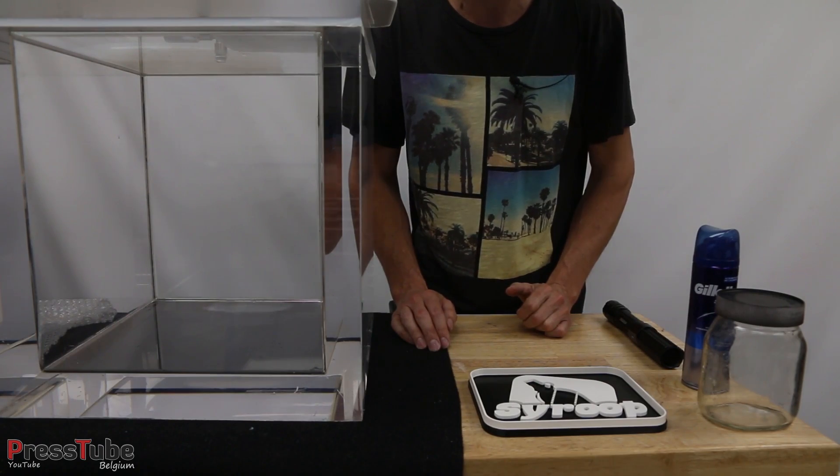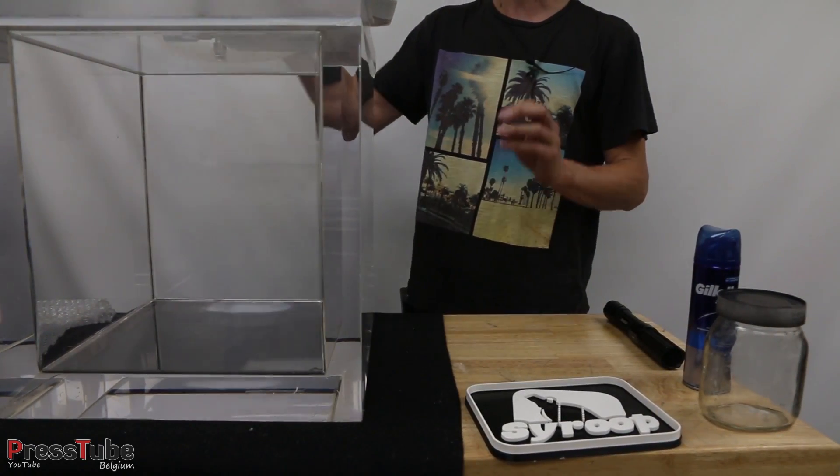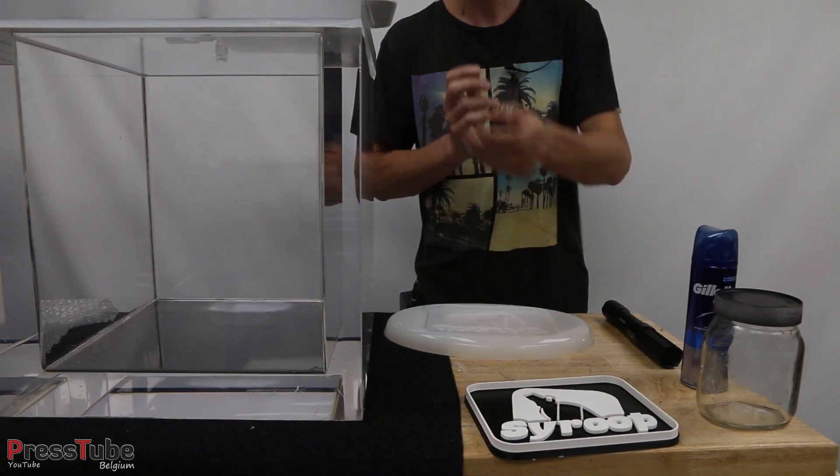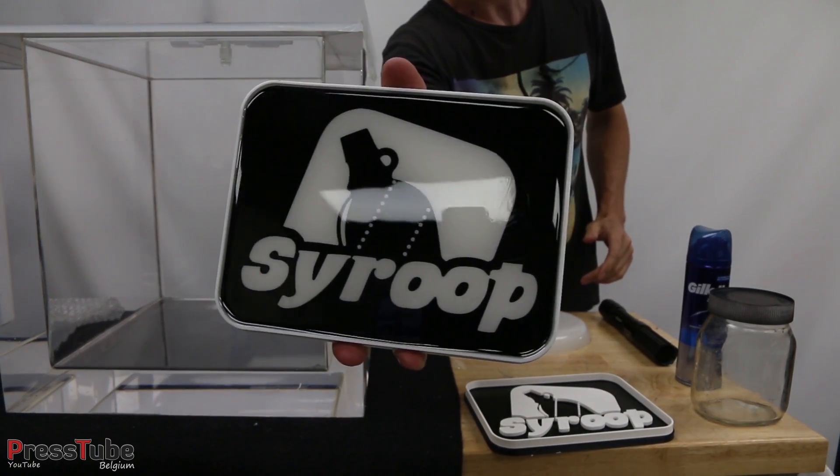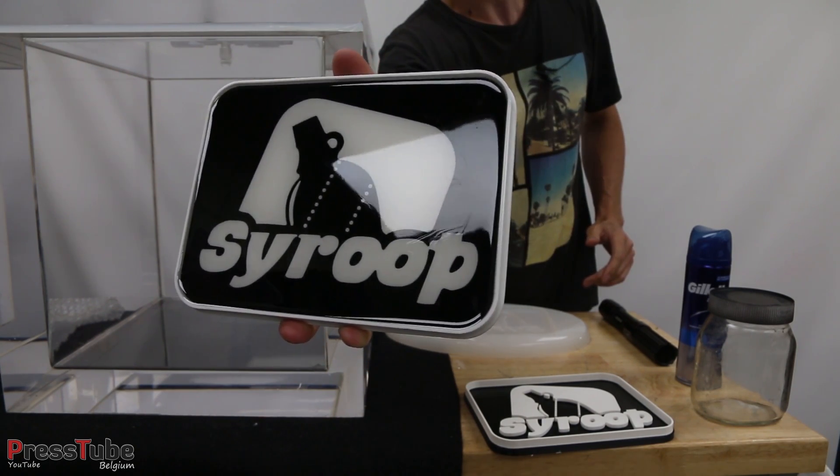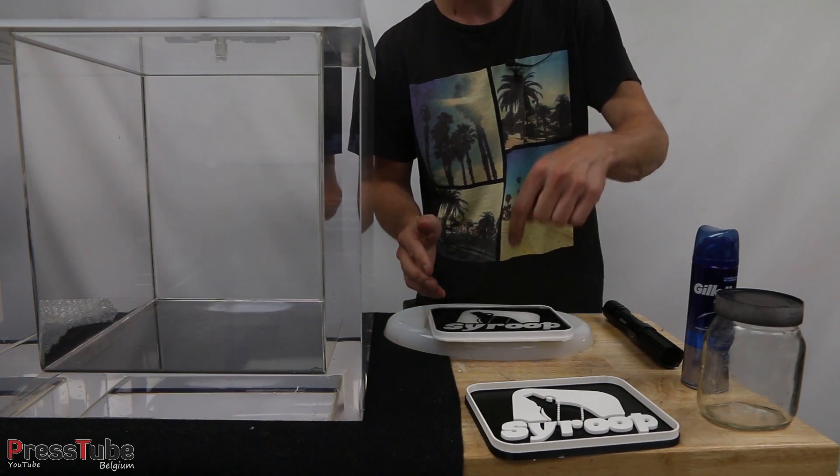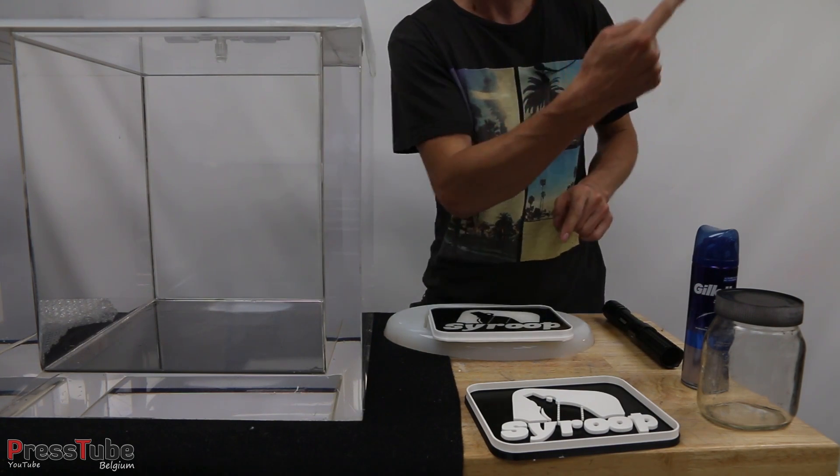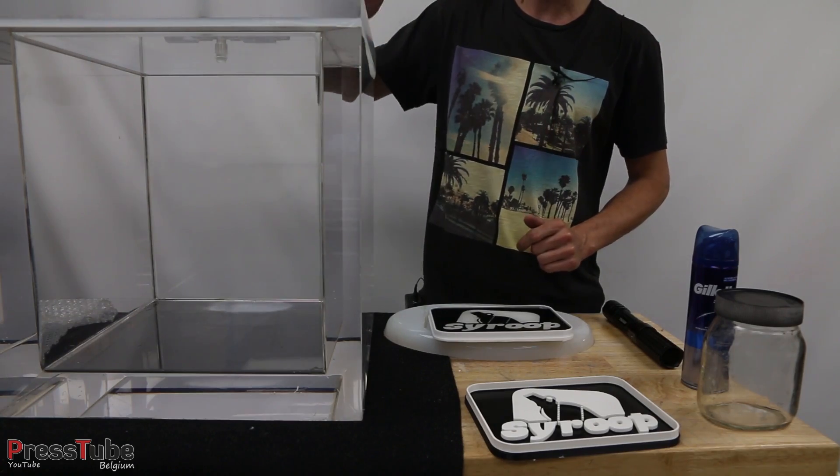make sure to check out his channel. I printed his logo on my 3D printer, then I made a silicon mold of the logo, and then I made this epoxy logo of his channel for him. He will come pick it up one of these days in my workshop, and I think he will do a video about it. So be sure to check his channel. I will put the link in the description below and also put a link in this corner or this corner.